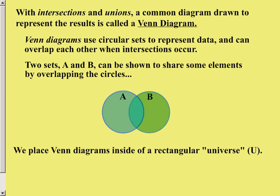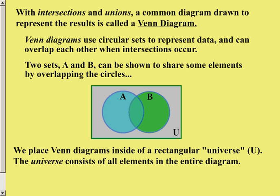Venn diagrams are placed inside of a rectangle which is referred to as the universe. The universe consists of all of the elements that are included in the entire diagram or the entire experiment, whatever it is that is being measured.